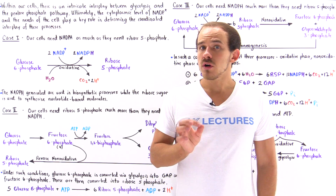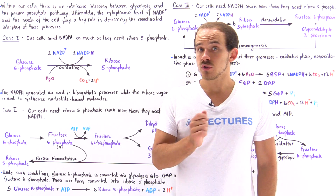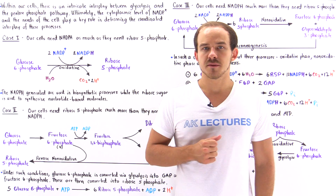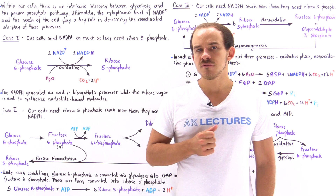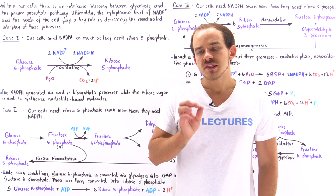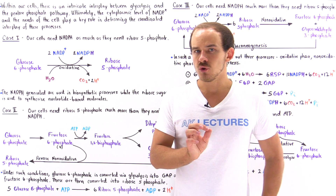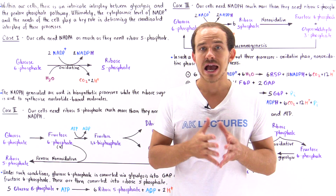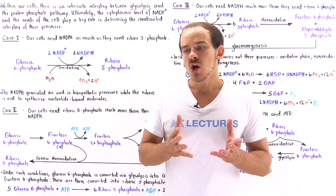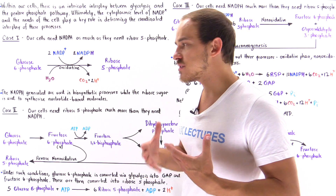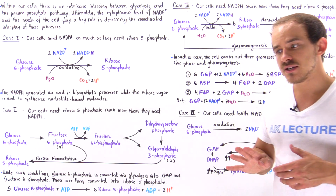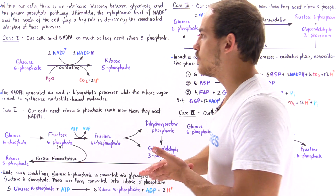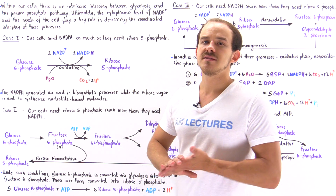Within our cells there's a coordinated and intricate interplay between the pentose phosphate pathway and the glycolytic pathway. What I'd like to focus on in this lecture is the factors that actually influence how this coordinated interplay between these two processes plays out. We're going to discuss four different cases that can exist within a given cell of our body. Let's begin with case number one.